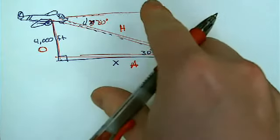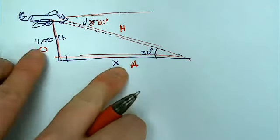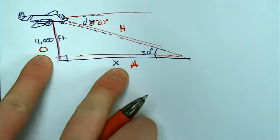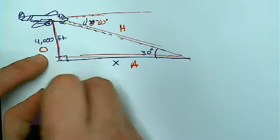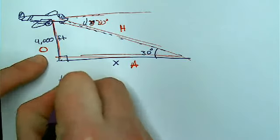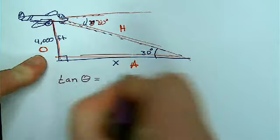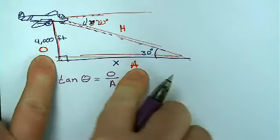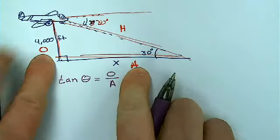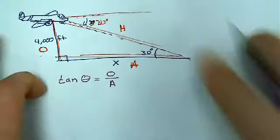So opposite, adjacent, hypotenuse. I'm working with opposite and adjacent. So, Valeria, what trig function did you say we should use? Tangent. How do you know that? Because tangent is the one that uses opposite and adjacent, and those are the two sides I'm playing with. I'm not playing with the hypotenuse. I don't know it, and I don't want it.